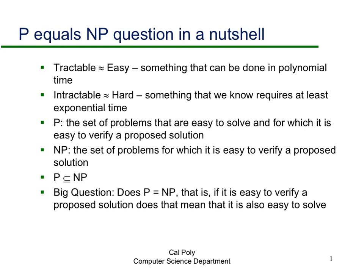It's pretty clear that P is a subset of NP. Problems that are both easy to solve and easy to verify are obviously contained in the problems where it's easy to verify. The big question is: does P equal NP? That is, if it's easy to verify a proposed solution, does that mean it's also easy to solve?